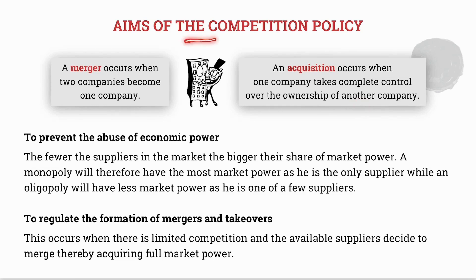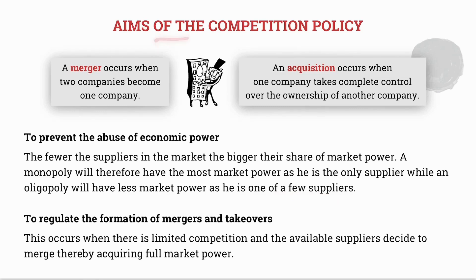The first aim of the competition policy is to prevent the abuse of economic power. The fewer suppliers there are in the market, the bigger their share of market power. A monopoly — one supplier — will have the most market power, whereas an oligopoly — a few suppliers, such as the banking industry — will have less. The next aim is to regulate the formation of mergers and takeovers, as mergers and acquisitions restrict competition and decrease the choices consumers have.